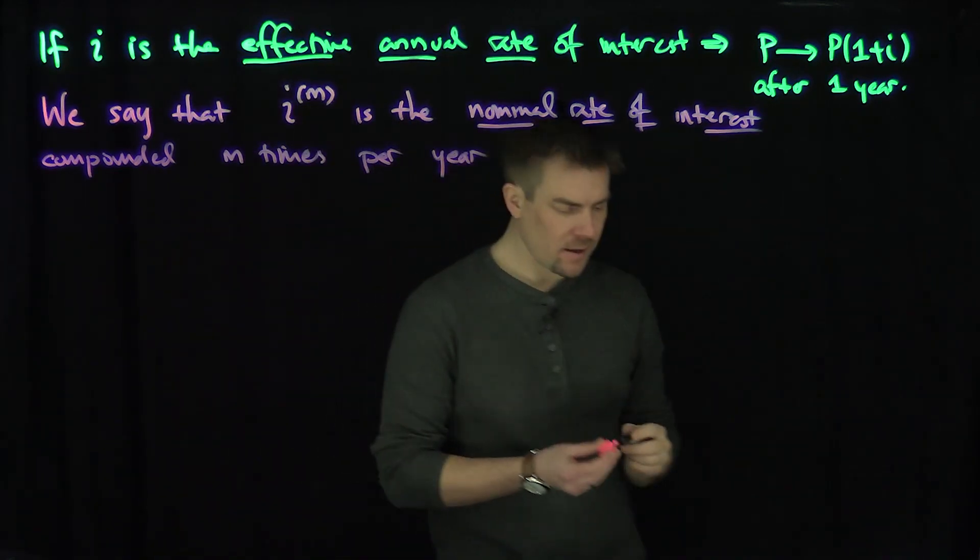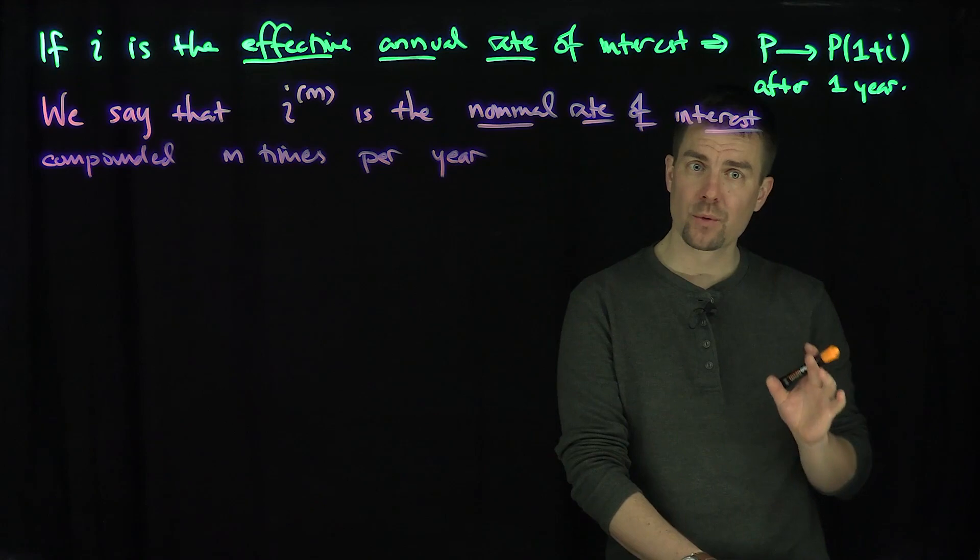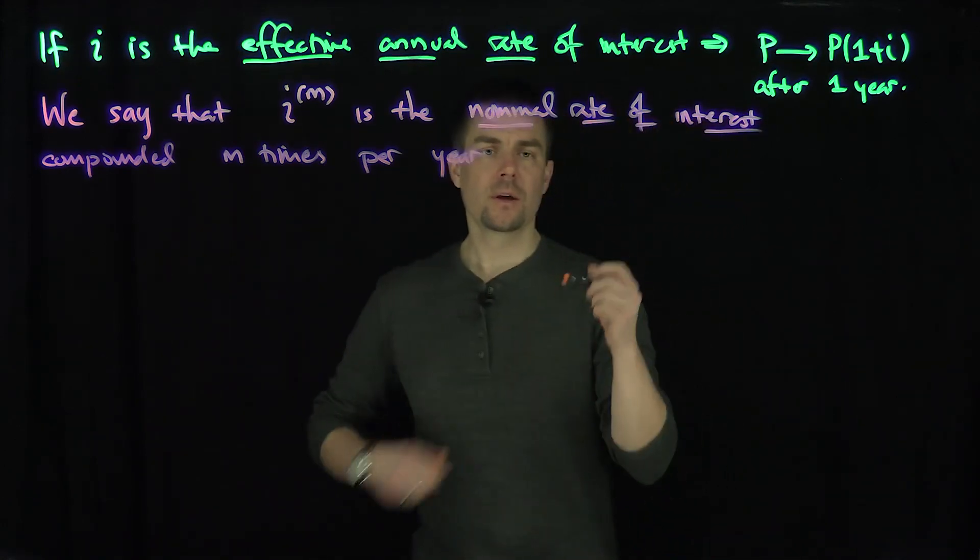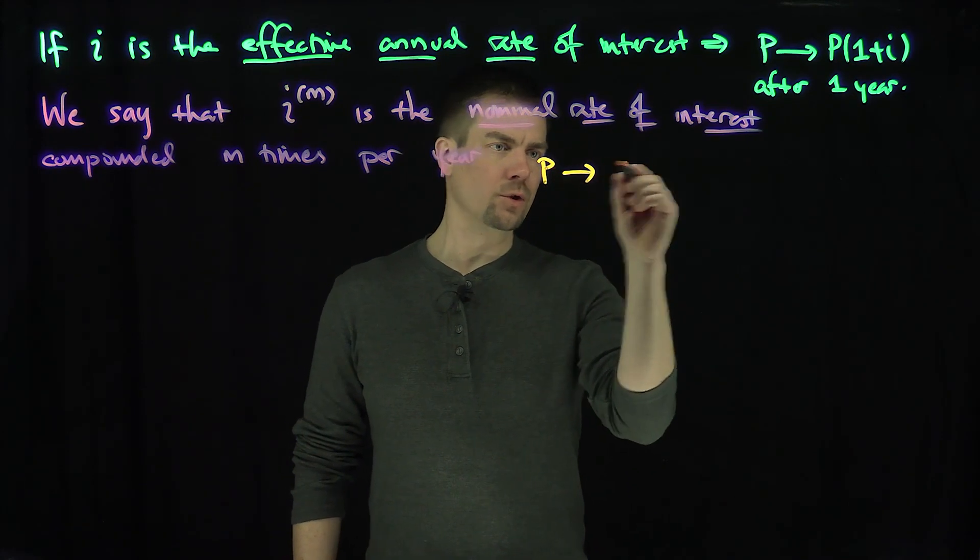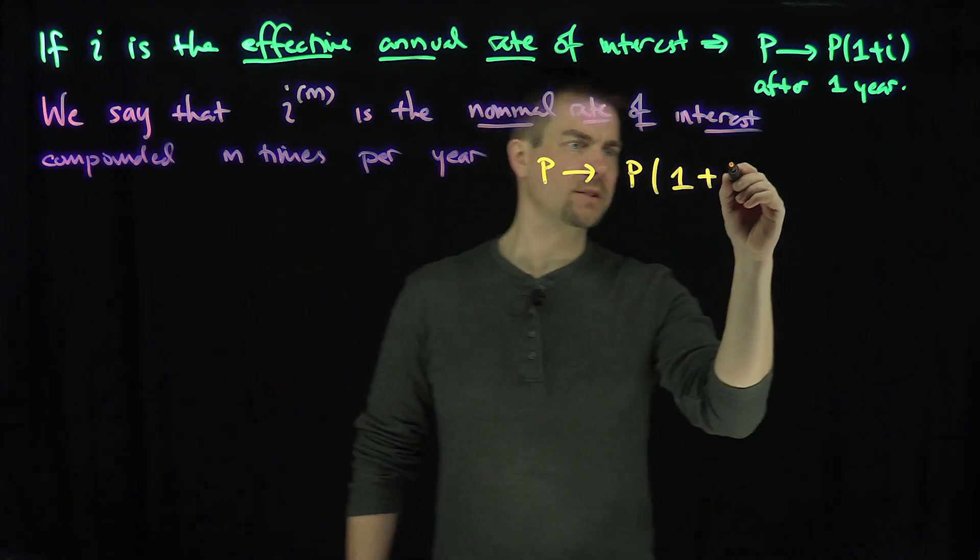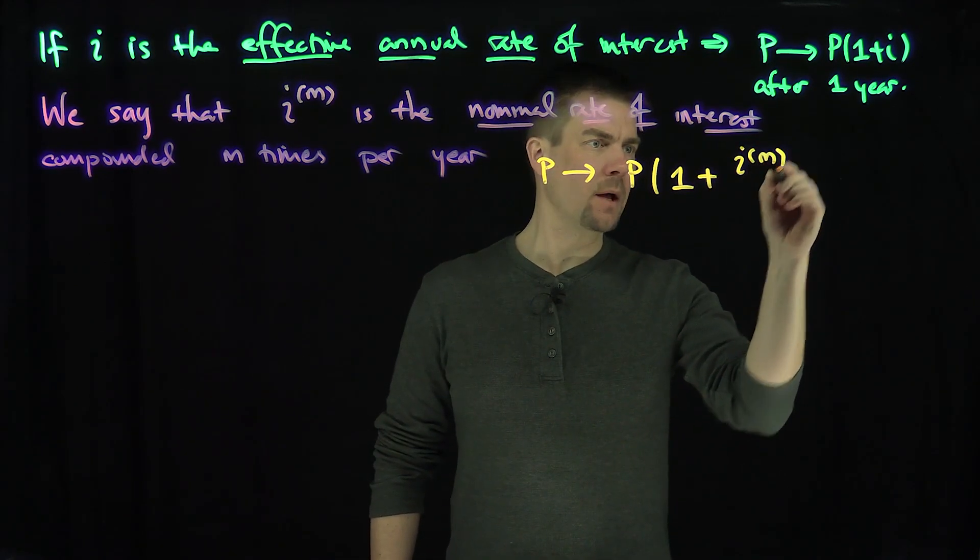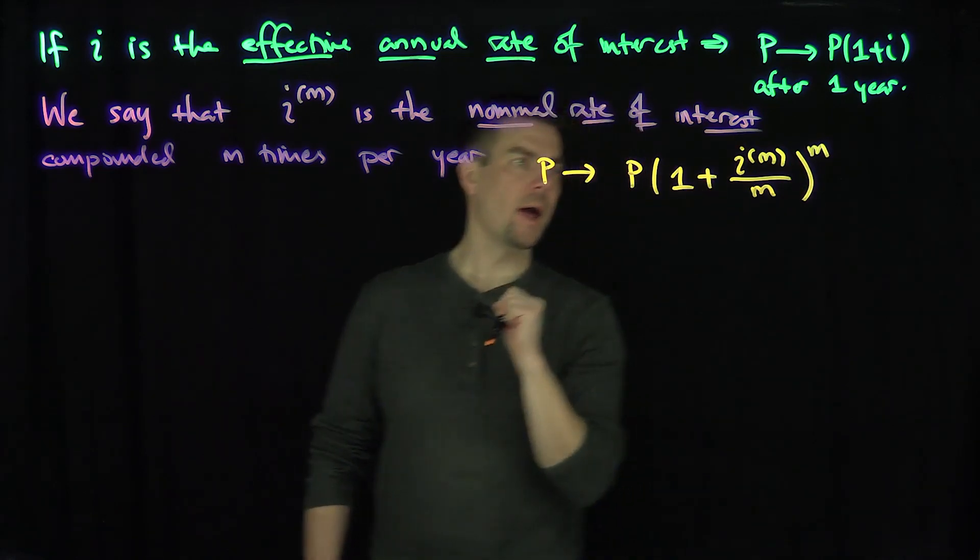And what does this mean? This means exactly that we have the following relationship between annual interest and nominal interest. The nominal interest P will go to, after one year, P(1 + i_m/m)^m.